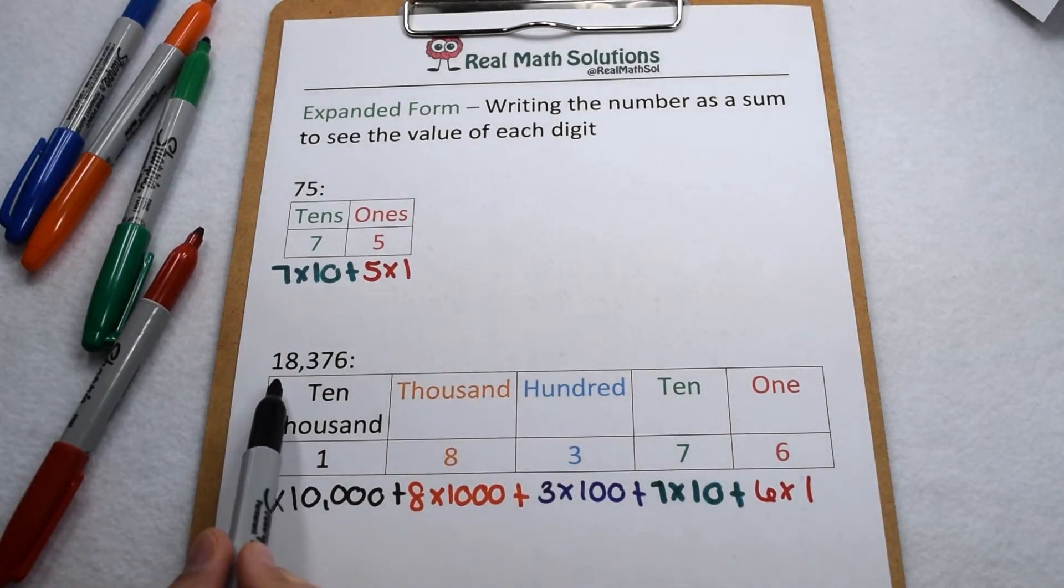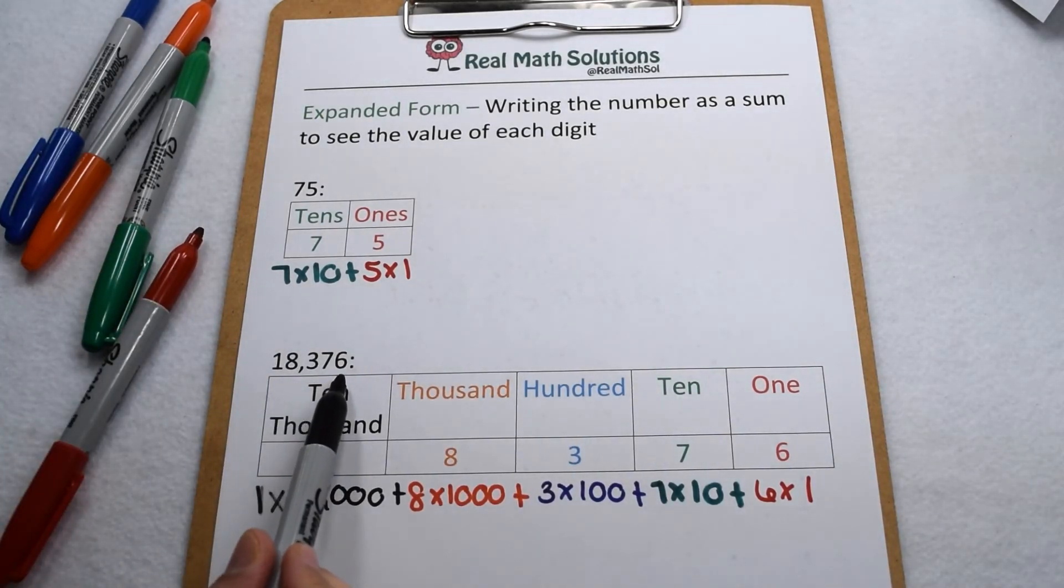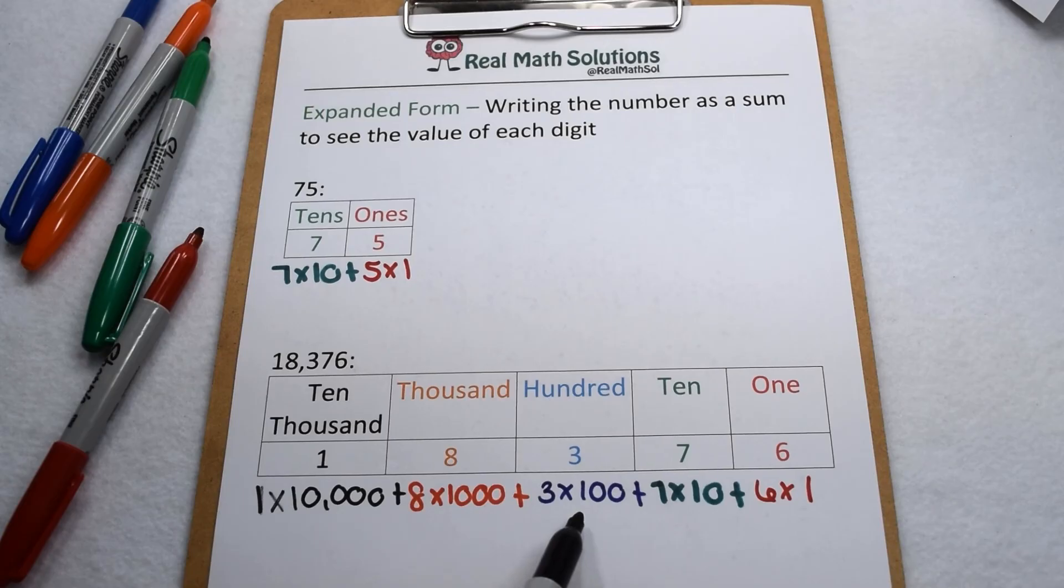So in expanded form, for 18,376, we have 1 times 10,000, plus 8 times 1,000, plus 3 times 100, plus 7 times 10, plus 6 times 1.